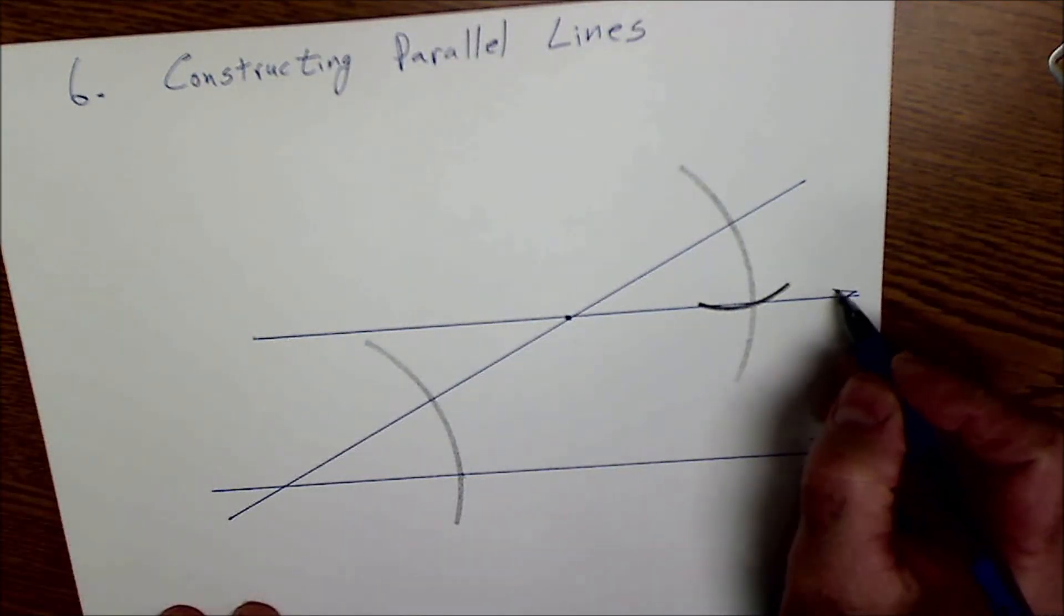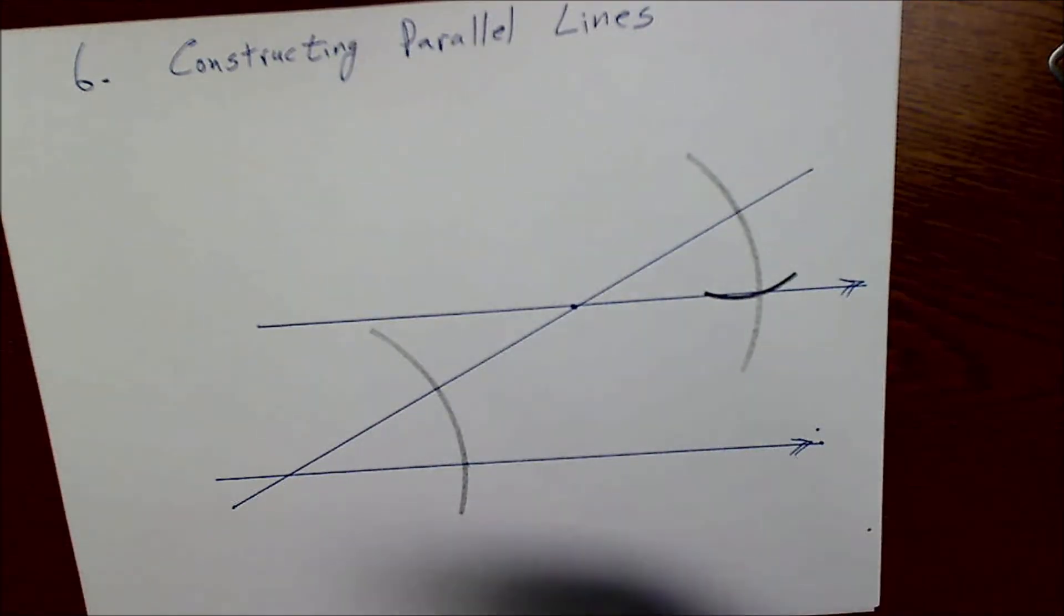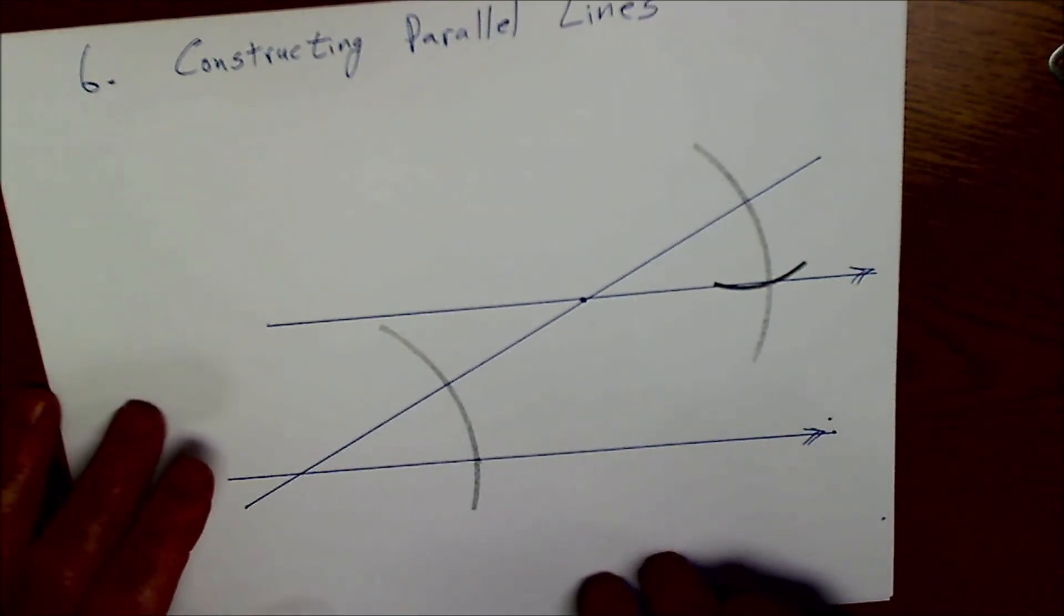And now I have a set of parallel lines. Parallel lines are usually denoted with like double arrows. It is in fact the way a lot of people lay projects out on property.